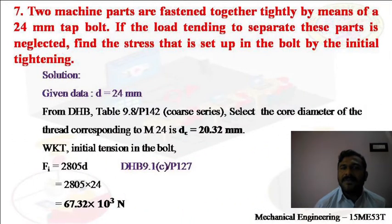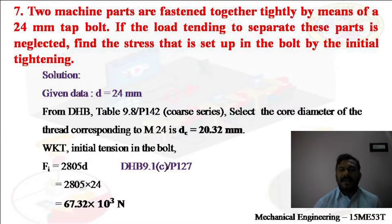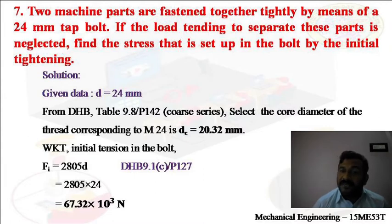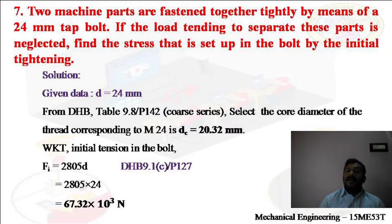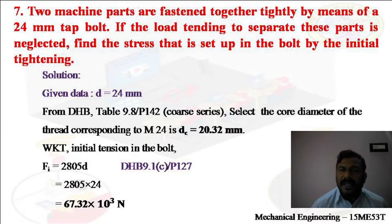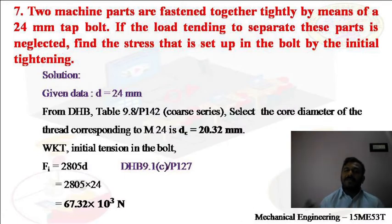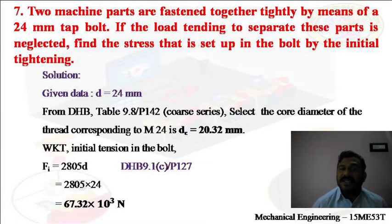Next, a simpler problem: Two machine parts are fastened together tightly by means of a 24 mm tap bolt. If the load tending to separate these parts is neglected, find the stress set up in the bolt by the initial tightening. The size of the tap bolt is 24 mm, and the external load is zero — that means external load is negligible. We need to find the stress induced while tightening the tap bolt with a spanner.